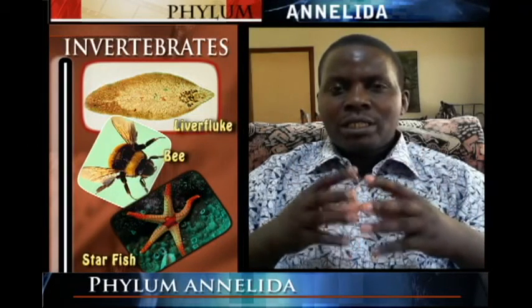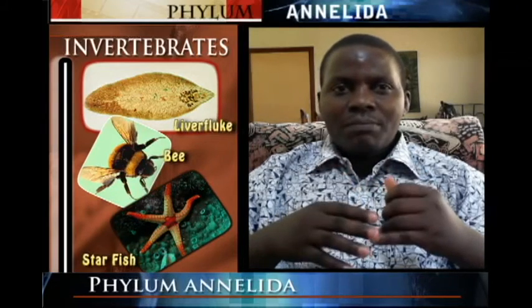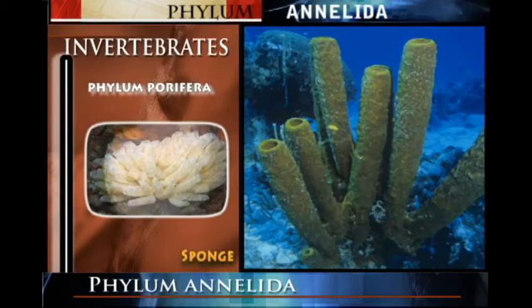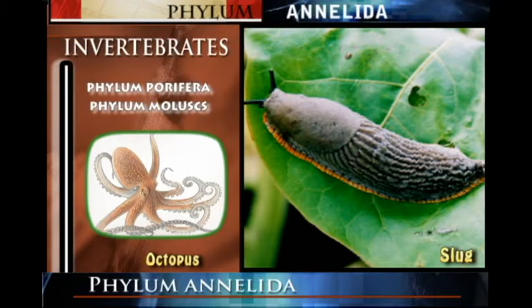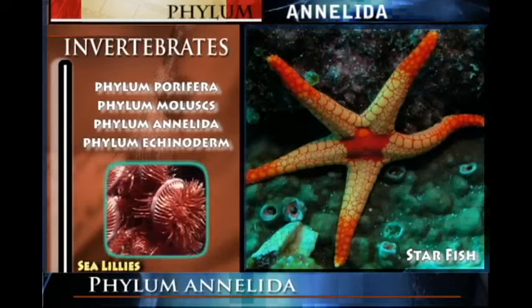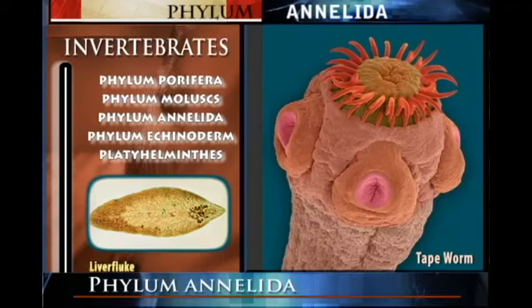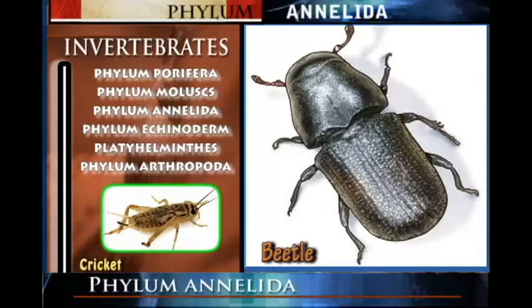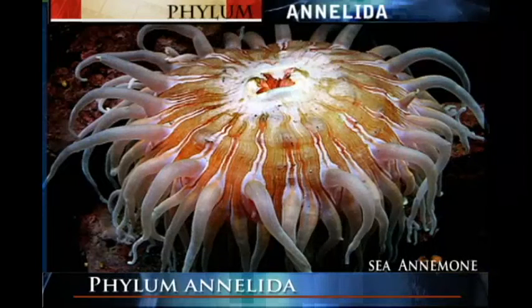Among the phylums found in the invertebrates, we have phylum Porifera, phylum Mollusca, phylum Annelida, phylum Echinodermata, phylum Platyhelminthes, phylum Arthropoda, and phylum Cnidaria. We are now going to start looking at all these phylums.